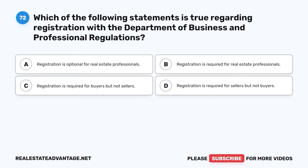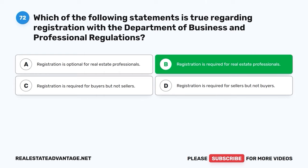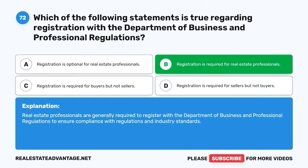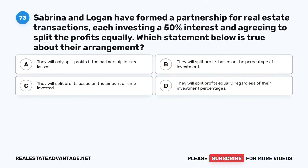Question 72. Which of the following statements is true regarding registration with the Department of Business and Professional Regulations? A. Registration is optional for real estate professionals. B. Registration is required for real estate professionals. C. Registration is required for buyers but not sellers. D. Registration is required for sellers but not buyers. The correct answer is B: Registration is required for real estate professionals. Real estate professionals are generally required to register with the Department of Business and Professional Regulations to ensure compliance with regulations and industry standards.